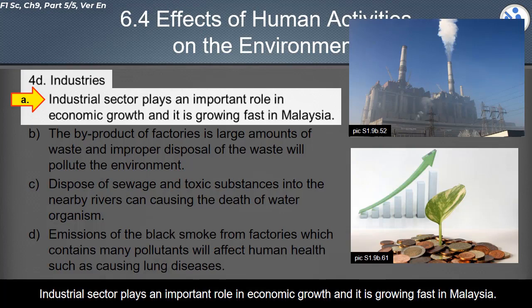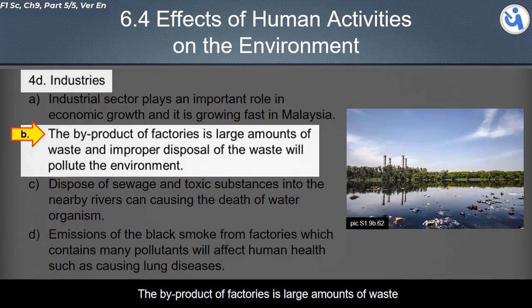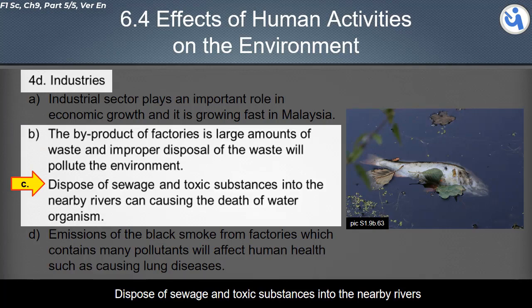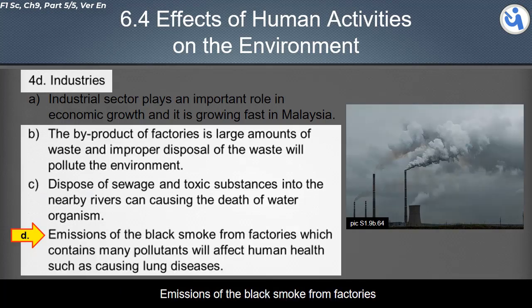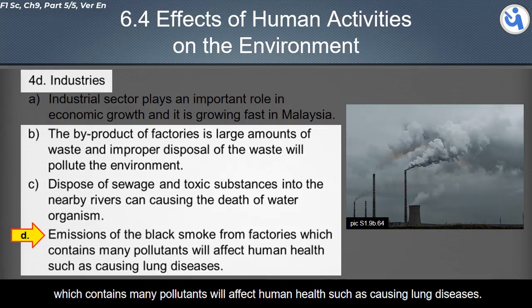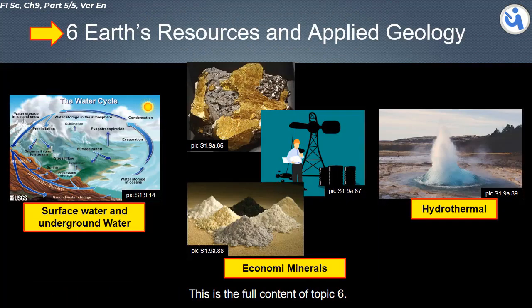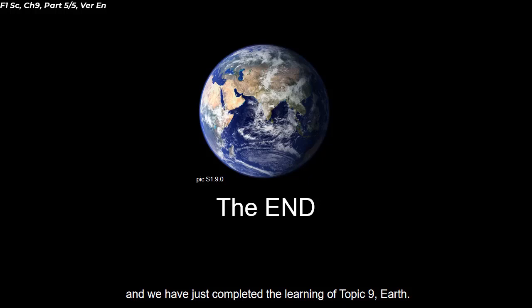About the negative impacts of industries: the industrial sector plays an important role in the economy and is growing fast in Malaysia. The by-product of factories is large amounts of waste, and improper disposal of waste will pollute the environment. Disposal of sewage and toxic substances into nearby rivers causes the death of water organisms. Emissions of black smoke from factories contain many pollutants and affect human health, such as causing lung diseases. This completes the full content of Topic 6. Thank you for watching.